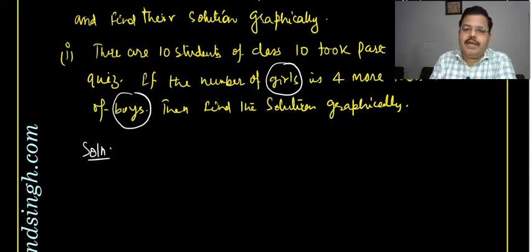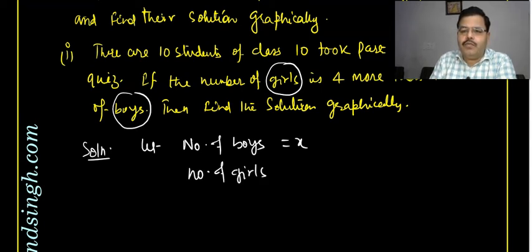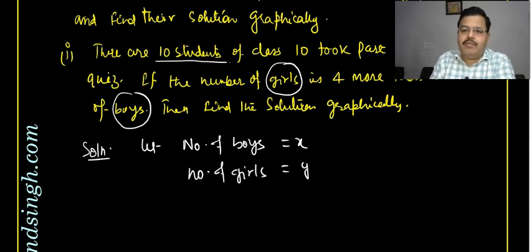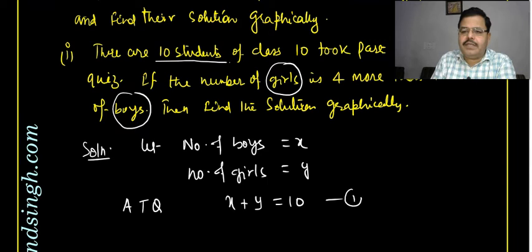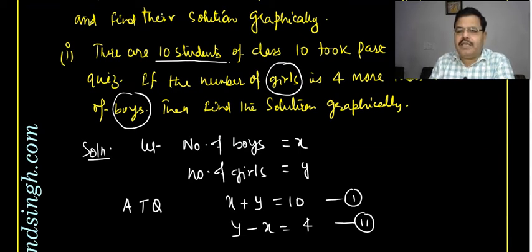In solution, let the number of boys be x and the number of girls who took part in the quiz be y. Clearly, total 10 students took part in mathematics, so the number of boys plus number of girls equals 10. This is the first condition and first equation. Number of girls is 4 more than the number of boys, so y minus x equals 4. This is the second condition.